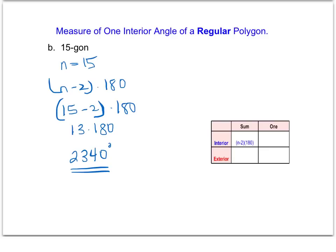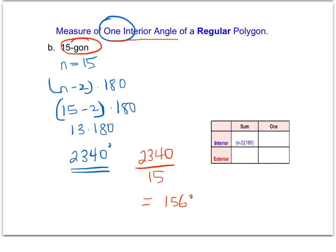We don't need to draw a 15-sided figure to figure out what one interior angle is going to be. All we have to do is take the total, 2,340, and divide by how many sides there are. 2,340 divided by 15 gives us 156 degrees. So one interior angle of a regular 15-gon is 156 degrees.